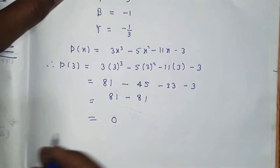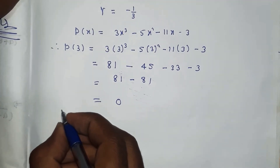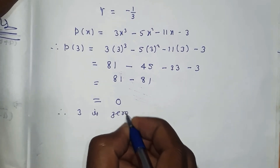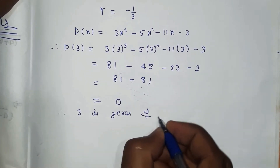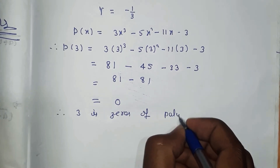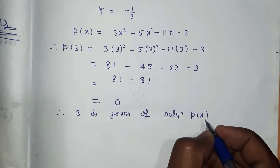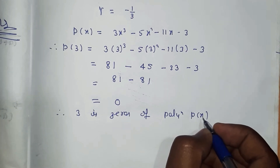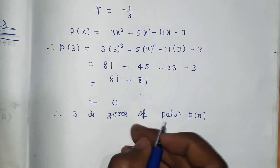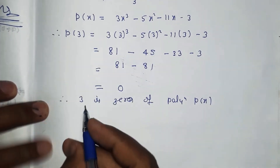Since p(3) = 0, this means 3 is a zero of the polynomial p(x). Therefore, 3 is a zero of polynomial P(x).